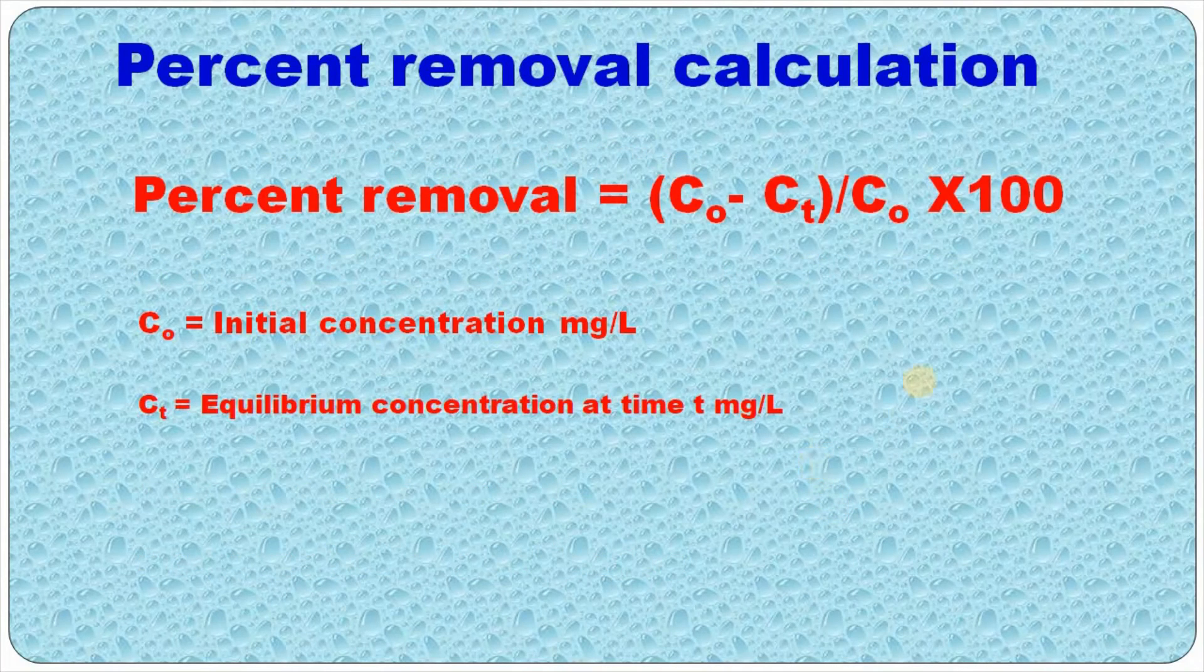Then comes percent removal. Percent removal can be calculated using C0 minus CT divided by C0 into 100.